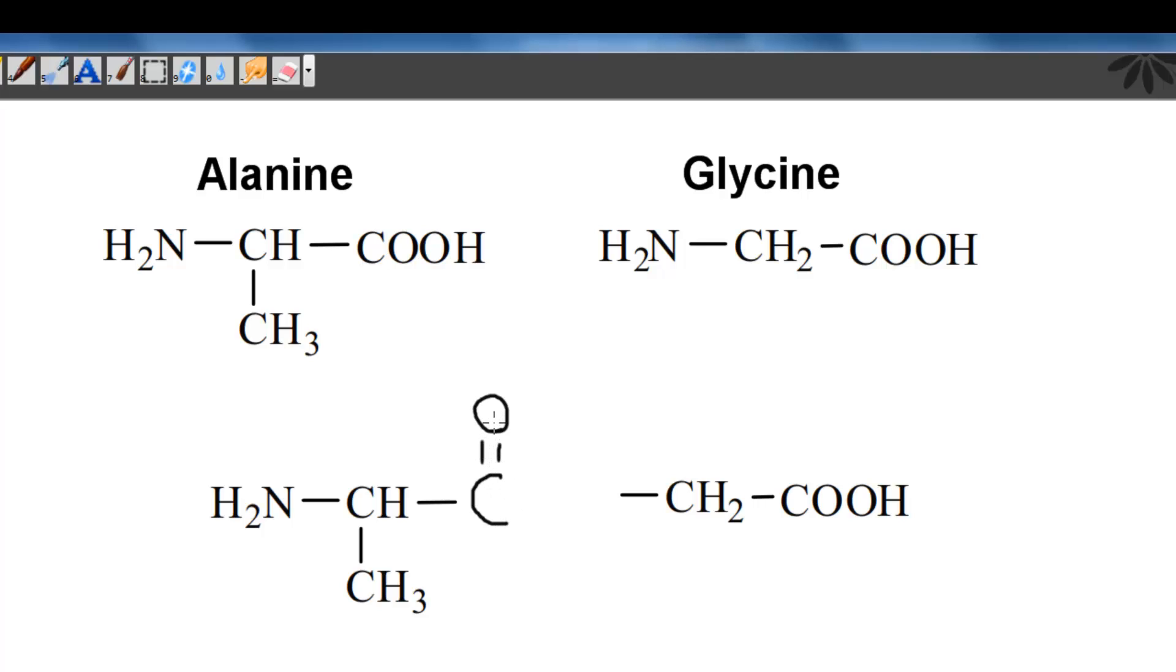I'm going to draw a C double bond to an O, and then a bond to a nitrogen, which is bonded to a hydrogen. Here we have the peptide bond in the red between the two amino acids.